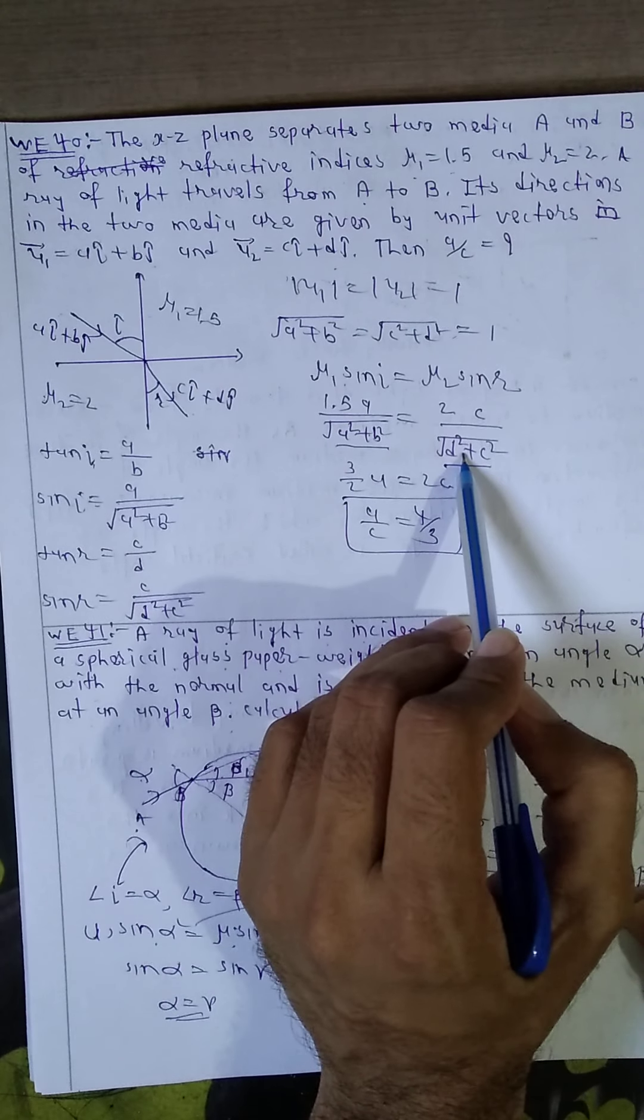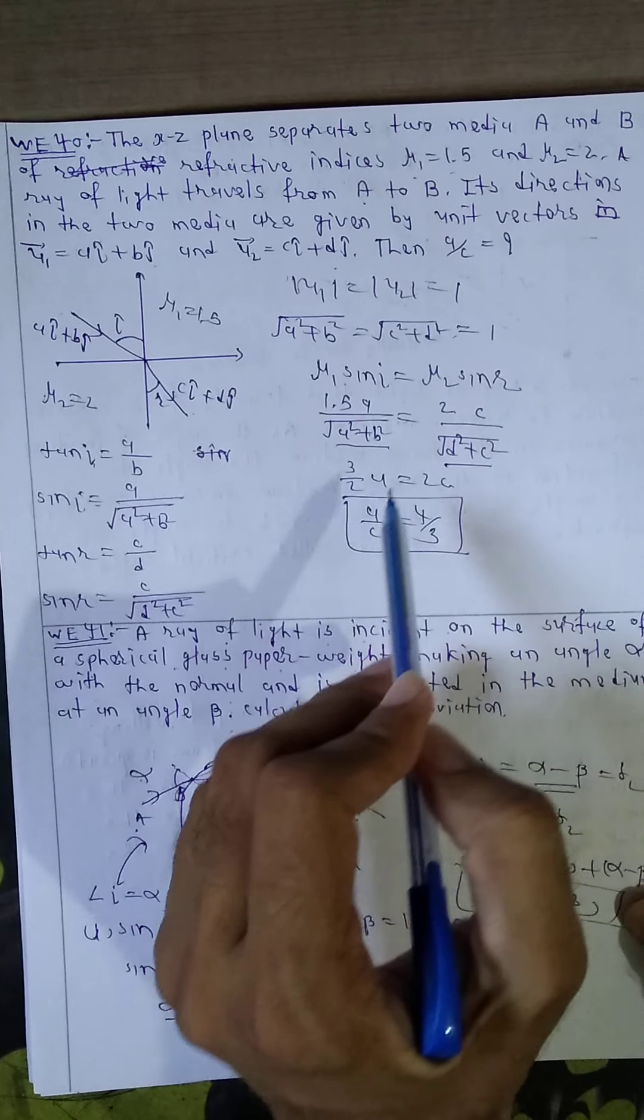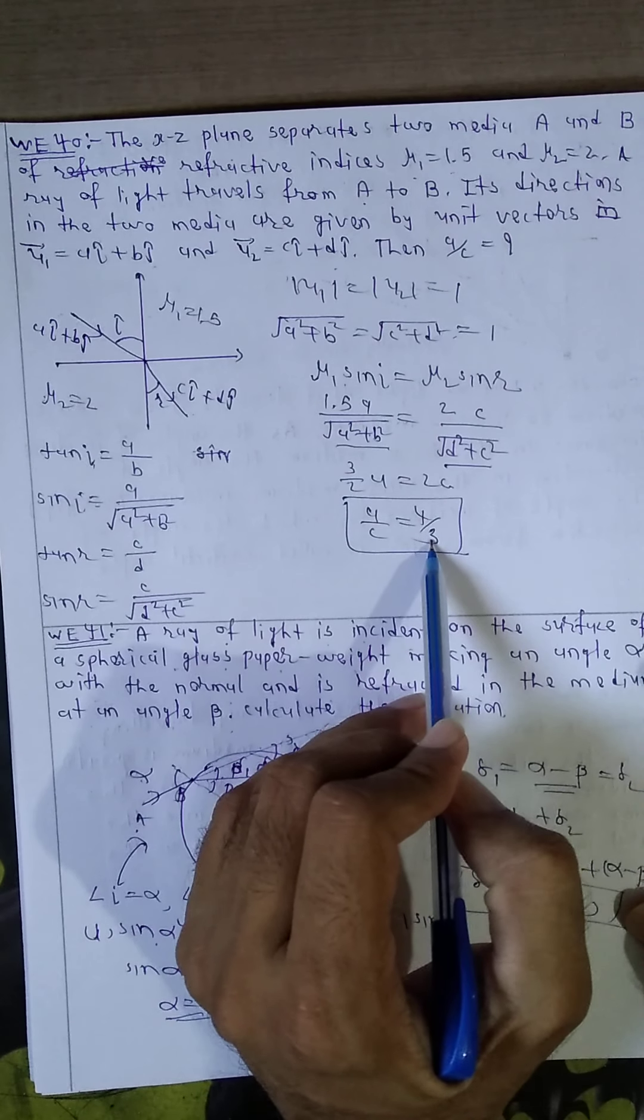Both sides cancel. Therefore, 3 by 2a equal to 2c. Therefore, a by c equal to 4 by 3.